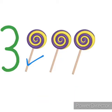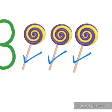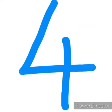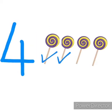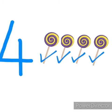So let us count. 1, 2, 3. Number 3, 3 lollipops. 1, 2, 3. After 3, number 4. 4 means how many lollipops? You all count, children. 1, 2, 3, 4. 4 lollipops.